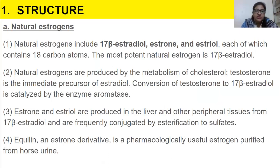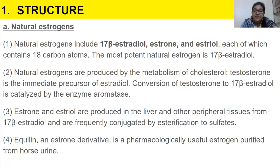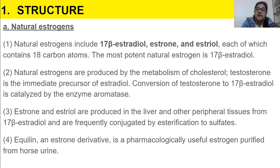Natural estrogens include 17-beta estradiol, estrone, and estriol, each containing 18 carbon atoms. The most potent natural estrogen is 17-beta estradiol. Natural estrogens are produced by the metabolism of cholesterol and testosterone. Testosterone is the immediate precursor of estradiol, and its conversion to 17-beta estradiol is catalyzed by the enzyme aromatase. This is very important because later we will study a drug class that works by inhibiting aromatase.